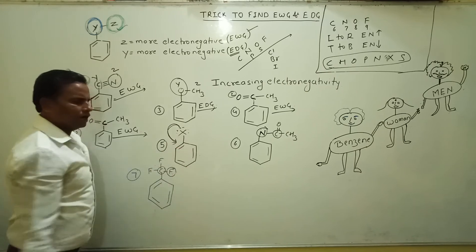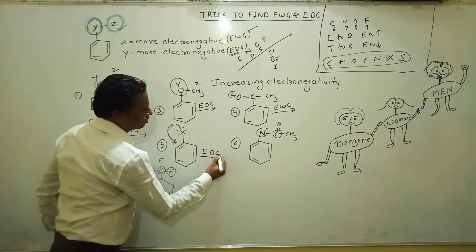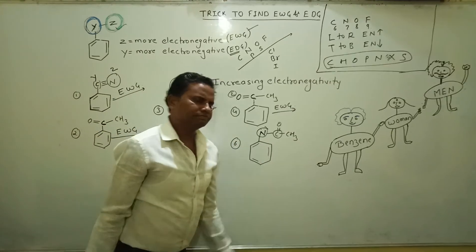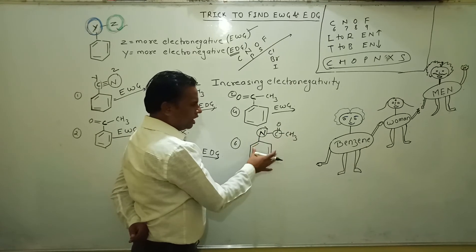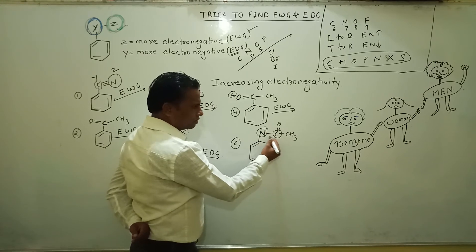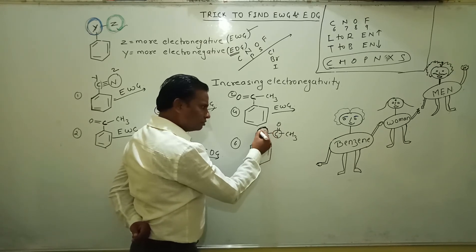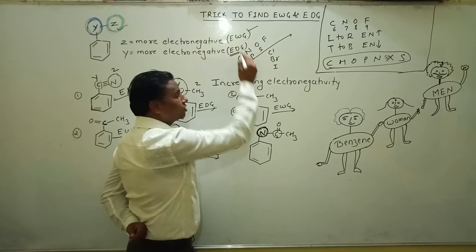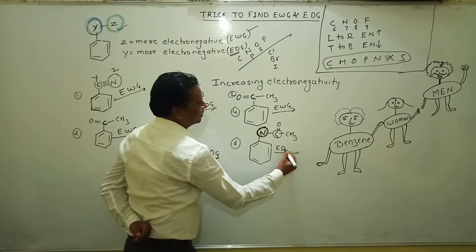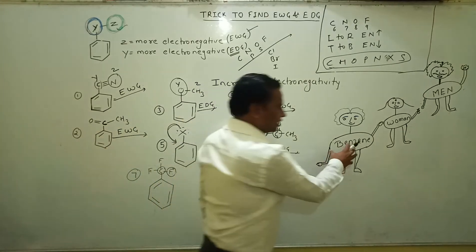Next is an amide group. In this case, nitrogen and carbon are present. Y is nitrogen and Z is carbon. Y (nitrogen) is more electronegative than Z (carbon), therefore Y is more electronegative — making this an electron donating group.